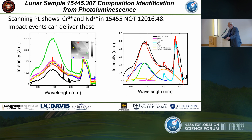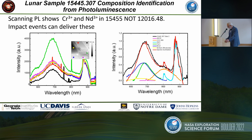We can learn more about impact events by looking at the rare earth elements present, which we did through scanning photoluminescence. Here are the spectra for the 145445 sample. Almost all spectra we've looked at have a big broad hump around 700 nm, which is fairly boring. But this sample is not — it has very reproducible features: a hump around 800 nm and a very large peak at 900 nm. We fit the spectra and extracted the ionic composition. The standard suspects are there — iron and manganese — but what's prevalent here and unusual for most samples is chromium and neodymium, which can be delivered by impact events.